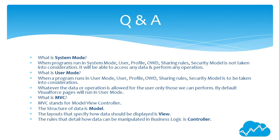What is system mode? When a program runs in system mode, the user profile, OWD, sharing rules, and security model are not taken into consideration. It will be able to access any data and perform any operation. What is user mode? When a program runs in user mode, the user profile, OWD, sharing rules, and security model are taken into consideration.